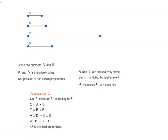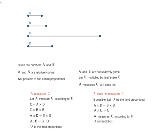Let us look at the other case where A does not measure C. Assume that D is the third proportional. In that case A times D equals B times B, which means A times D equals C. That means A measures C according to D, which is a contradiction. We started off by saying A does not measure C. So we have a contradiction, meaning no third proportional can be found.